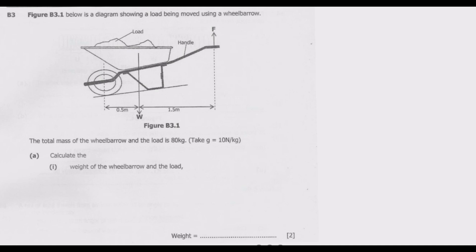In the diagram, you have a weight pulling downward and a weight pulling upward. The total mass of the wheelbarrow and the load is 80 kg. Take gravity to be 10 newtons per kg. Calculate the weight of the wheelbarrow and the load.